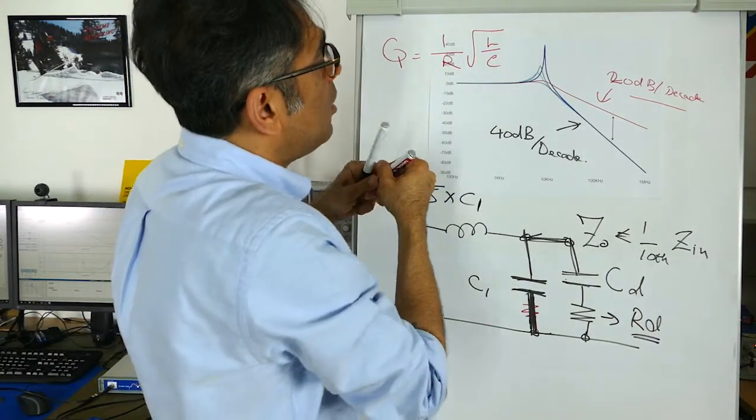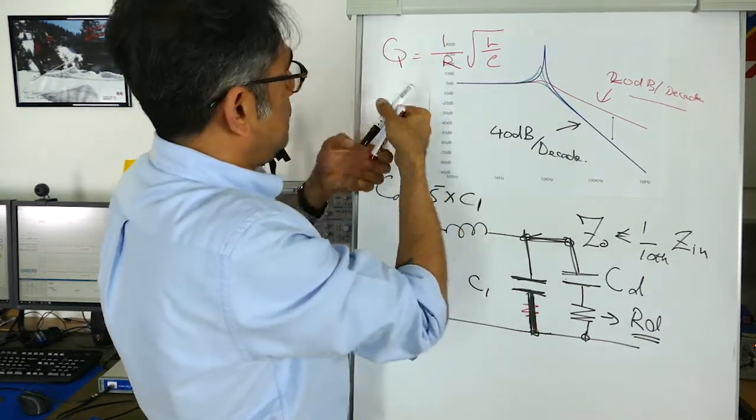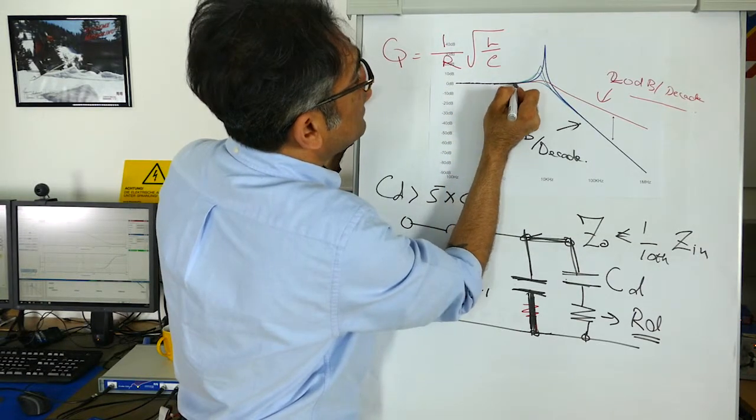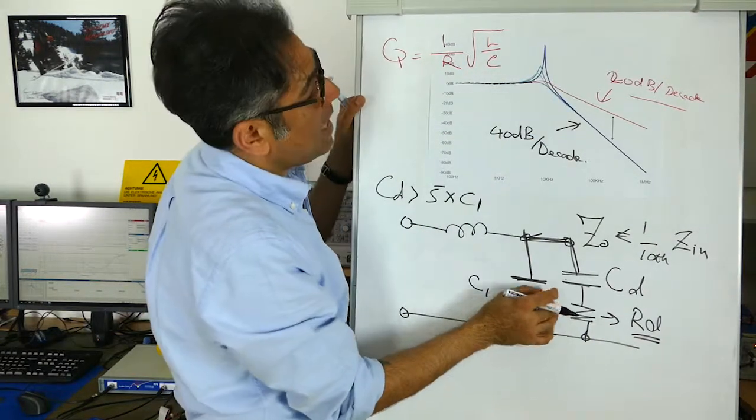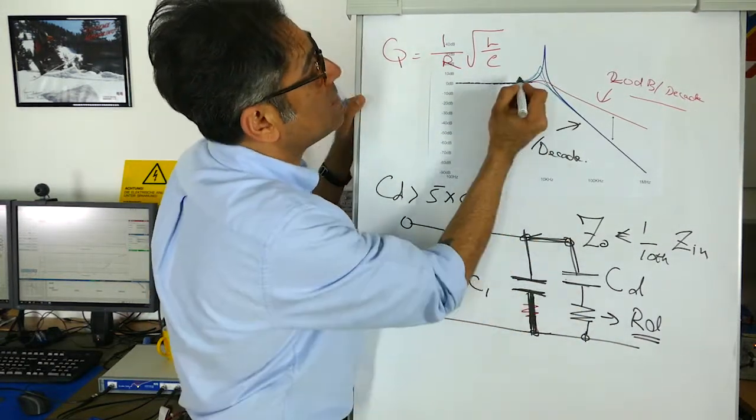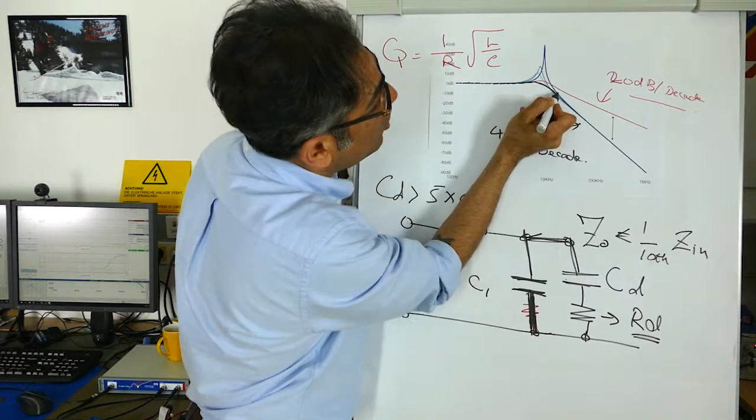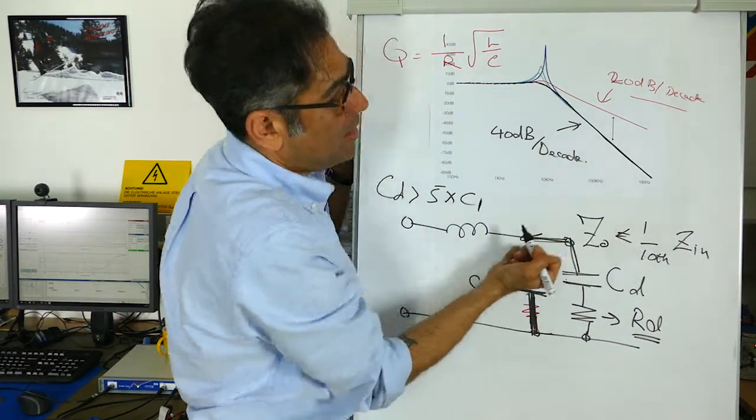And you can see here now on these plots, the black plot itself, I'm going to draw on it so that you can see, is when I have selected the capacitor that is five times bigger. Everything stays the same and I have selected this damping resistor to give me a Q of one and you can see that not only has the damping gone away but I am not losing my attenuation.